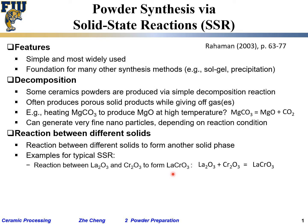To balance the lanthanum chromate reaction, add a factor of two on the right side. Now: two lanthanum on the left, two on the right; two chromium on the left, two on the right; and oxygen — three plus three equals six on the left, two times three equals six on the right. Balanced.